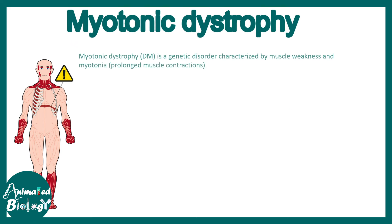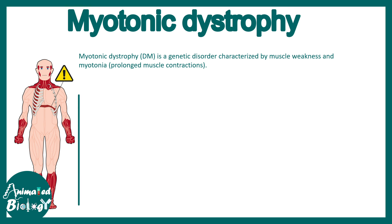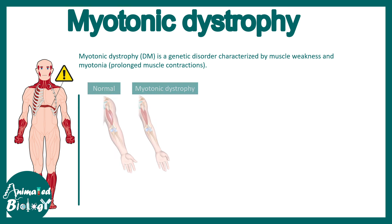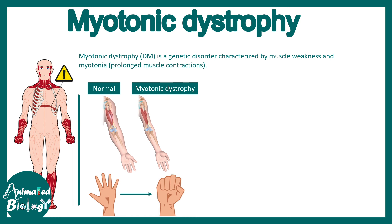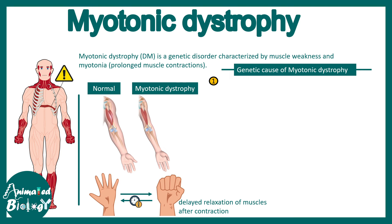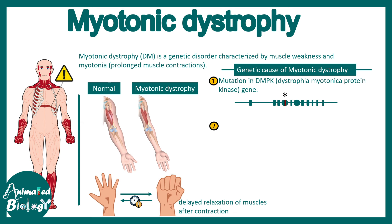Myotonic dystrophy is a genetic disorder characterized by muscle weakness and myotonia — that means prolonged and sustained contraction of the muscle. There would be thinning and atrophy of the muscle. For example, a patient trying to clench the fist and then relax — this simple event would take much longer in patients suffering from myotonic dystrophy. So the delayed relaxation of the muscle is one of the hallmarks.